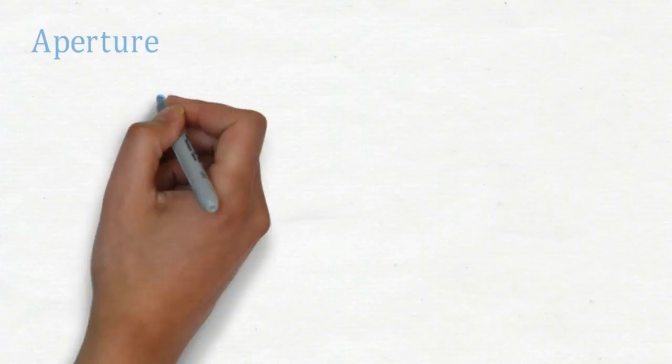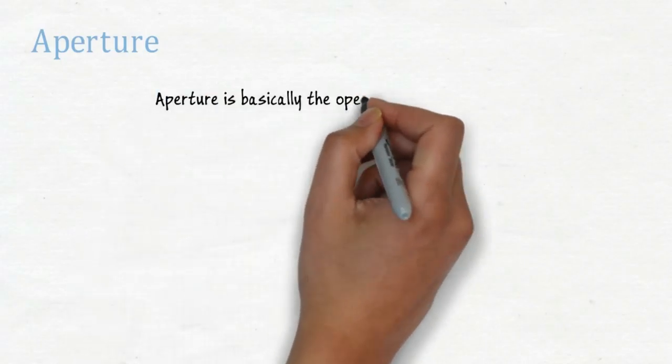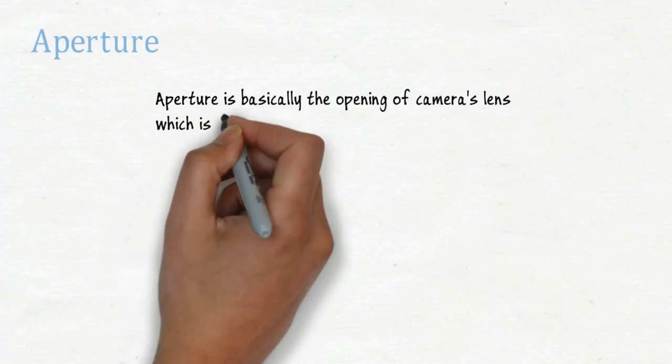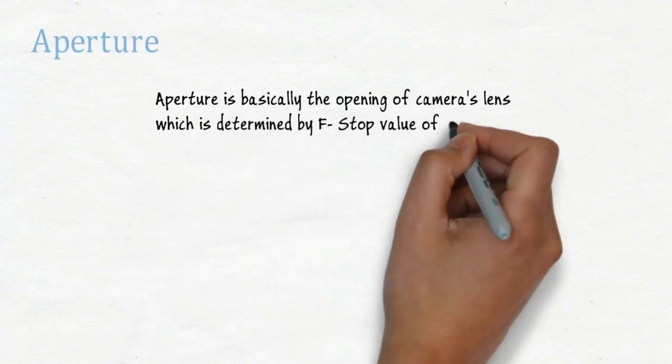Aperture. Aperture is basically the opening of camera's lens, which is determined by an f-stop value of your camera.